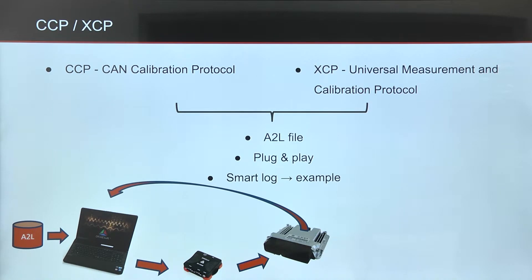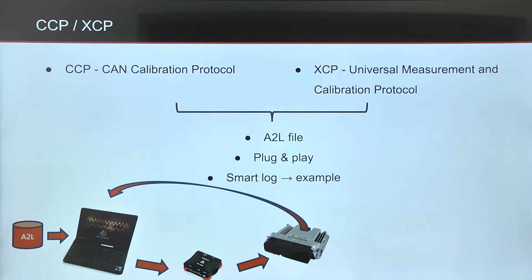For both of these protocols we use an A2L configuration file, which includes the complete channel list and the key for unlocking the ECU. With this we have a complete plug-and-play solution, meaning that we can just import the A2L file, connect the cable to the ECU, and immediately get all the channels and all the data in the channel list.